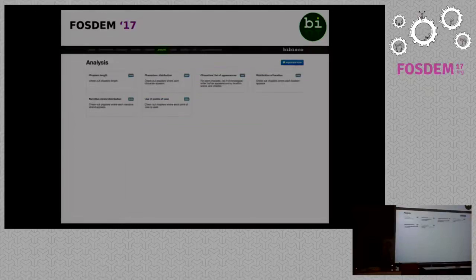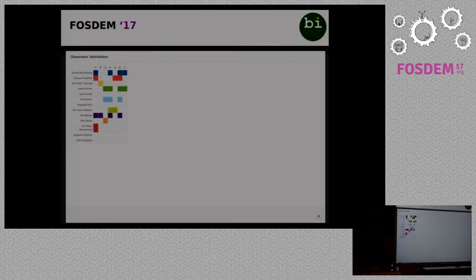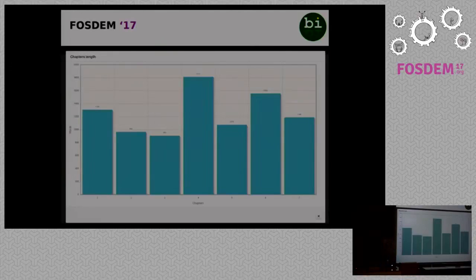If you tag the scenes properly, you can use the analysis section. The analysis section shows you where and how often characters, location, point of view, and narrative strands show up in your story and in exactly what chapter — all in a visual way. For example, here you can see the character distribution across the chapters of your novel, and here you can see the chapter length graph.